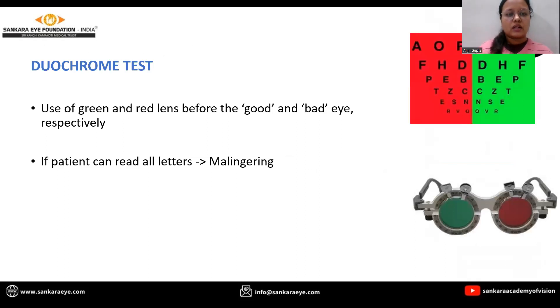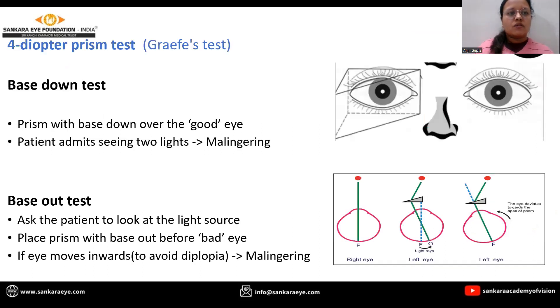The geochrome test: we use green and red lenses before the good and bad eye respectively. If the patient is able to read all the letters, including the letters on the red background, they are concluded to be a malingerer.